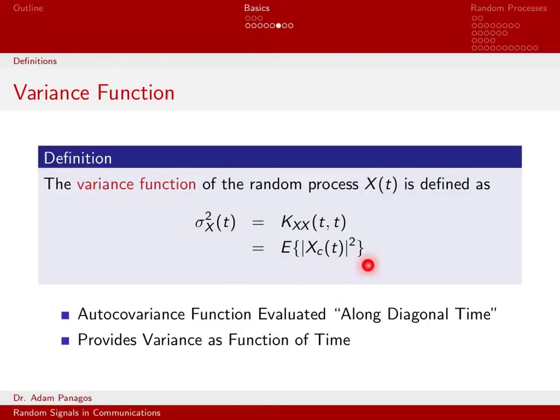That's why this is the variance function, because as a function of time, it tells us what the variance of the random process is. That should make sense, because at each point in time we have a random variable. So this quantity is really telling us at any time what the variance of the random variable is at that time.